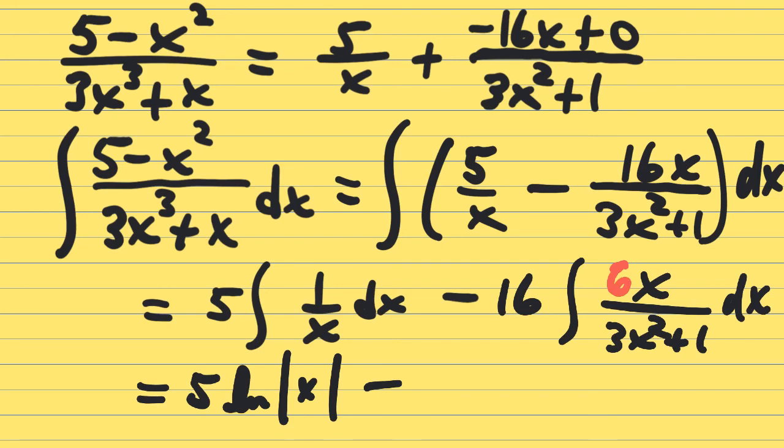If there were a 6 in the numerator, the derivative of that denominator, the derivative of 3x squared plus 1 is 6x. It's totally fine to multiply in a 6 into that numerator to give you the derivative that you need, but you've got to keep it balanced, so you take it right back out. Multiply a 6, multiply 1 sixth, and it keeps it balanced out into the original value. So that gives us 16 over 6 is 8 thirds.